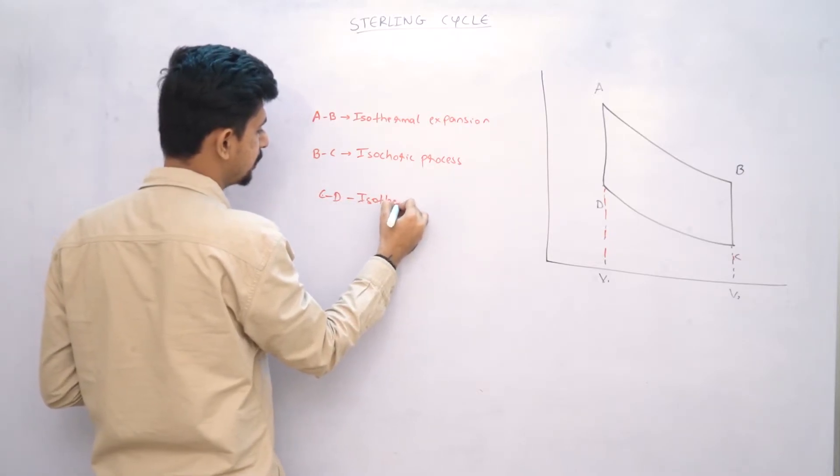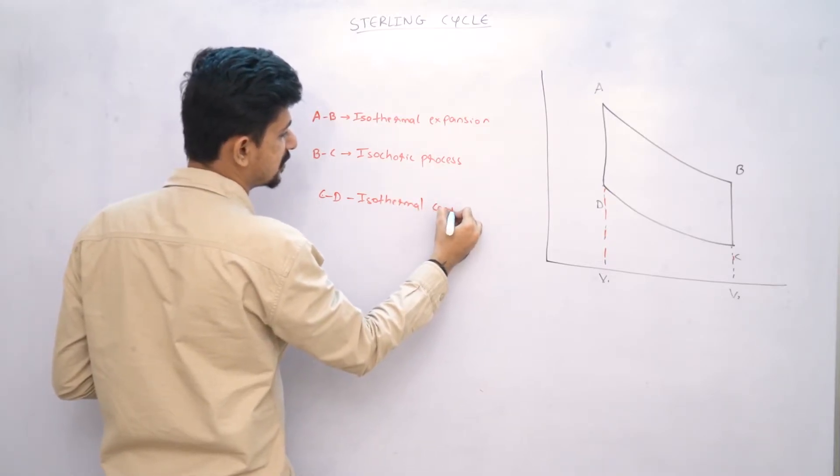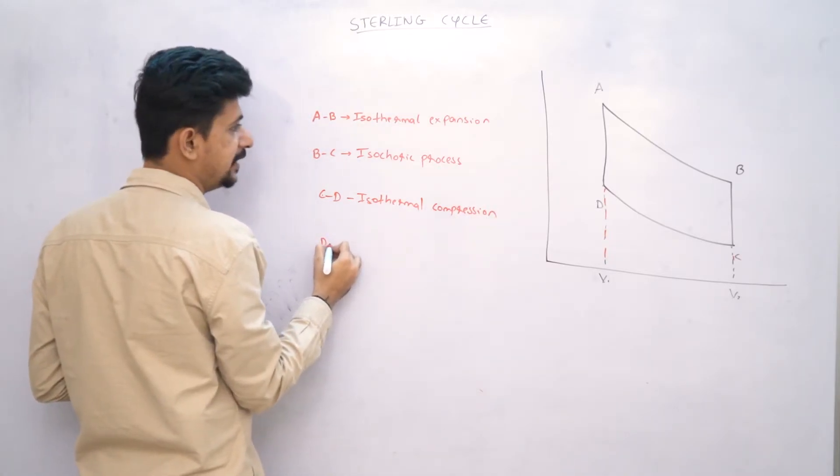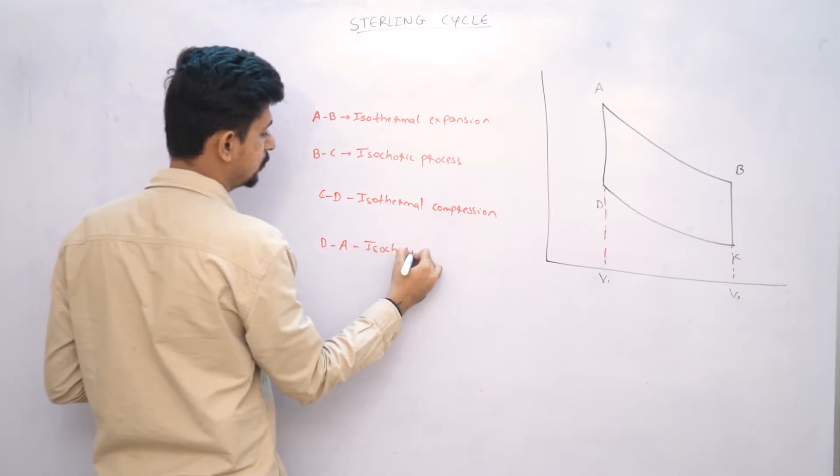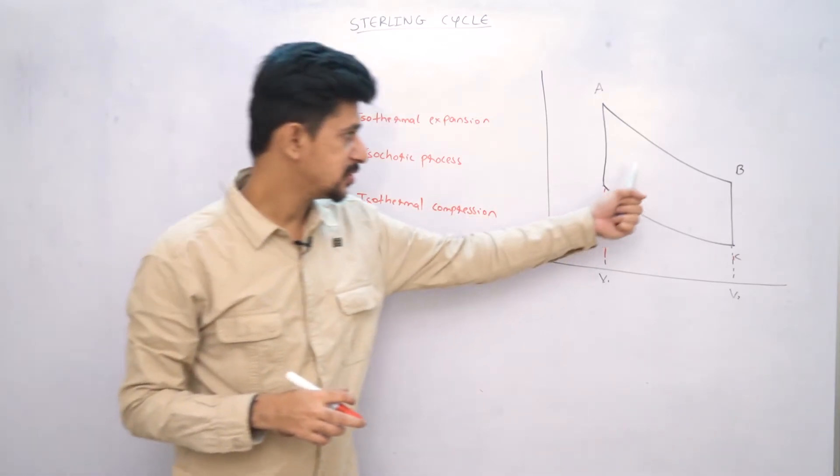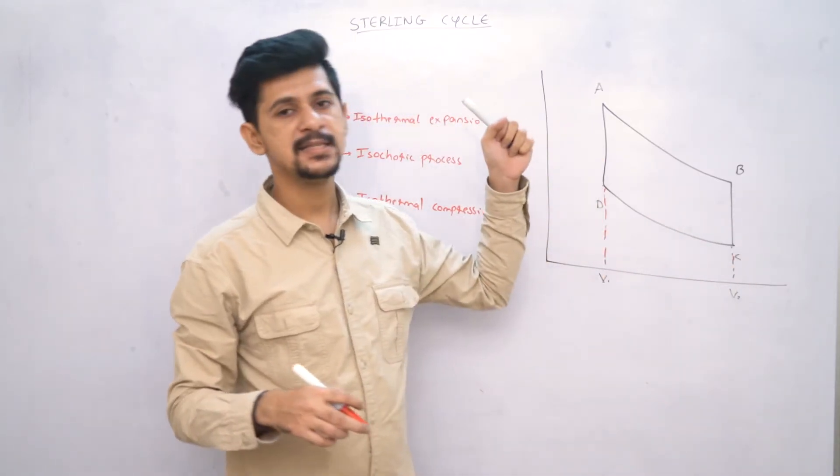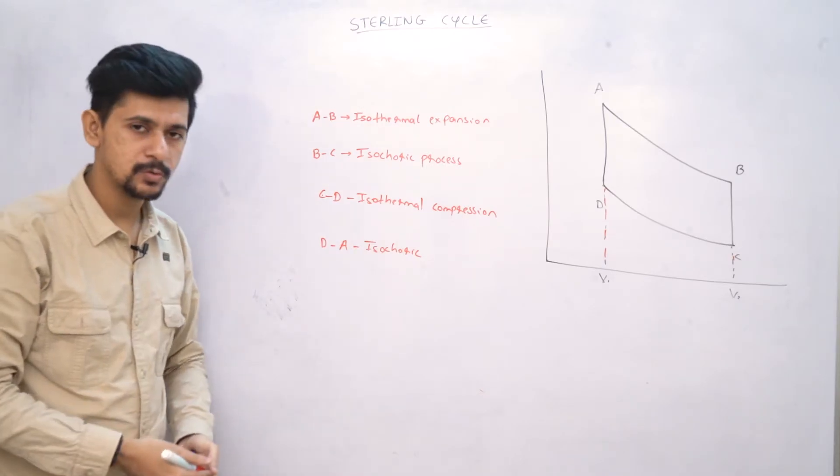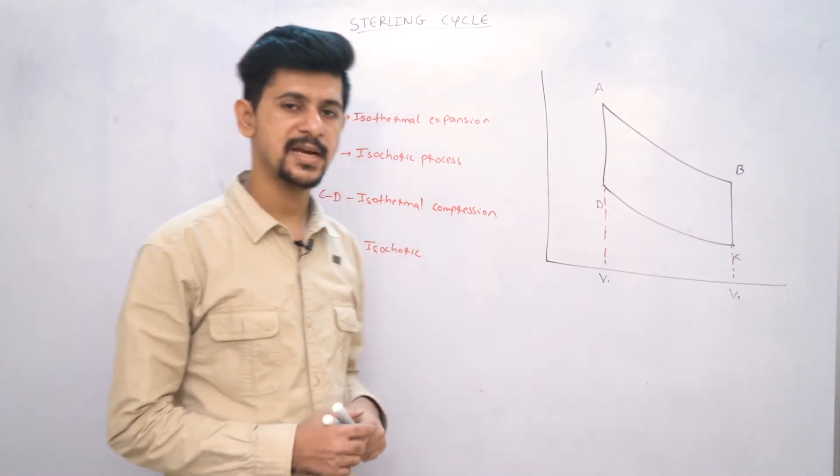Now from C to D, again this will be an isothermal, but in this case it will be compression. Again, D to A, where my cycle is complete, this will also be an isochoric process. So basically, these two processes A to B and C to D are isothermal. B to C and D to A is isochoric.